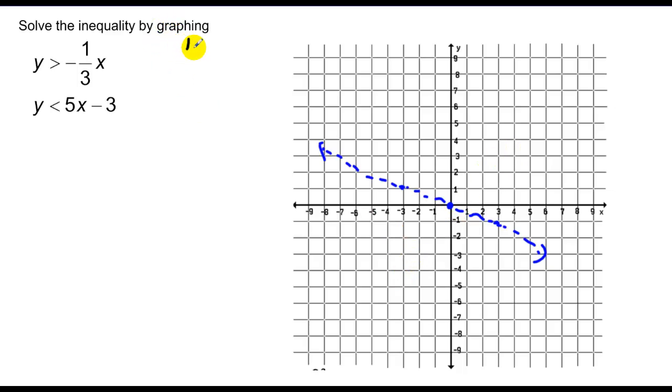I need to pick a point either above or below that line. I'm going to pick a sample of 1, 1, so I would get 1 greater than negative 1 third. True statement, therefore shade up towards 1, 1.